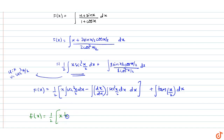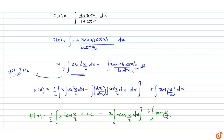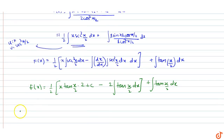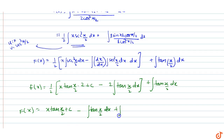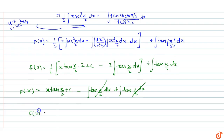The integral of sec²(x/2) becomes 2·tan(x/2) plus C (integration constant). So we have (1/2)·[x·2·tan(x/2) − 2·integral of tan(x/2) dx] plus integral of tan(x/2) dx. Multiplying through by (1/2), f(x) = x·tan(x/2) − integral of tan(x/2) dx + integral of tan(x/2) dx. The tan(x/2) integrals cancel, giving f(x) = x·tan(x/2) + C.